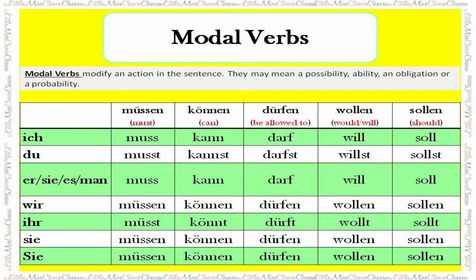'Dürfen' means 'to be allowed to'. Its conjugations are: darf, darfst, darf, dürfen, dürft, dürfen, dürfen.